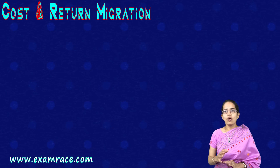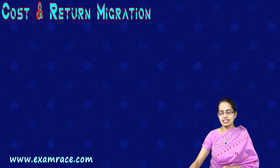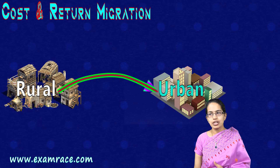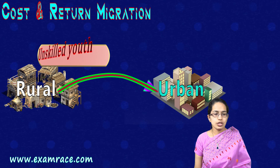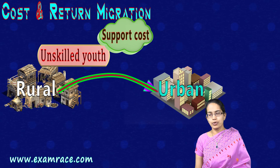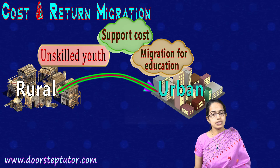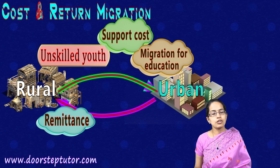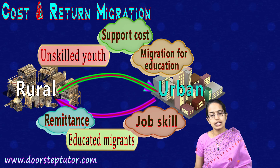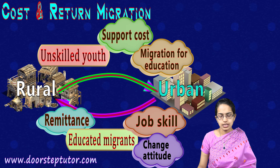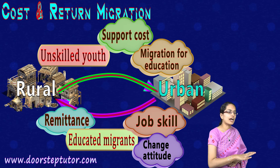The next important concept is cost and return migration. When moving from a rural area to an urban area, if the person is skilled and young there are more viable opportunities, better living conditions, better support, and educational migration. However, when moving back to the rural area, the returnee brings more remittances, more educational institutions, more jobs, more skills, and helps change the attitudes of people living in the rural vicinity.